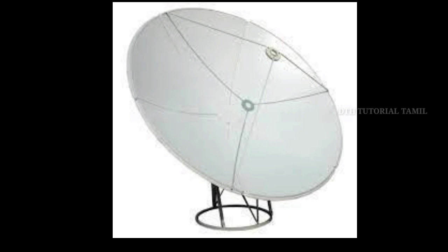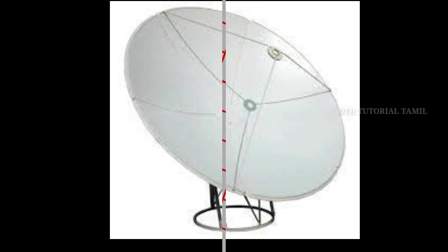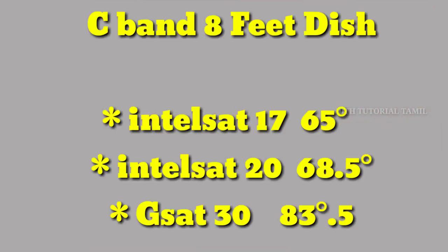If you are not using this, you will use this. We can cover the satellite. The Intelsat set is 14, and the Intelsat set is 20. The G-Set is 30. In this case, we can cover these 3 satellites. We can cover a new channel for these 3 satellites.